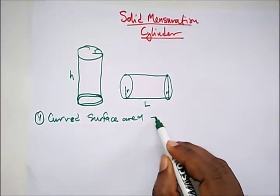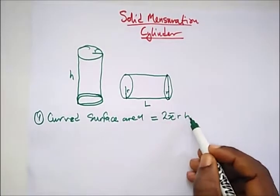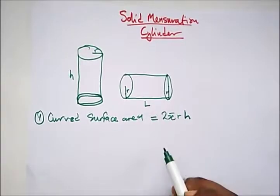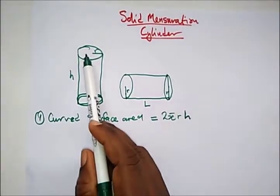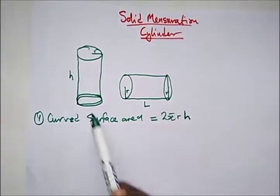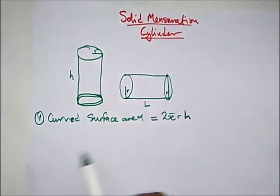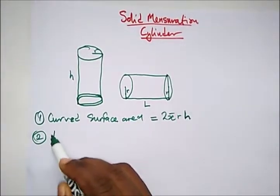Curved surface area of the cylinder is 2πrh. That's the formula - that's 2π, the circumference of this particular circle, multiplied by the height. That's the curved surface area.